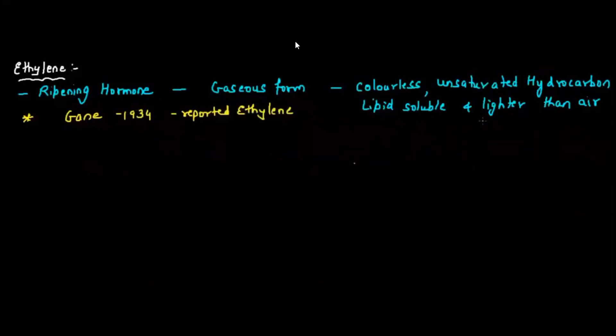When you pick up a ripened fruit, the sweet smell that you get is because of the ethylene. Where is ethylene synthesized? Ethylene is synthesized at the seed and fruits.